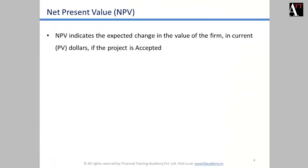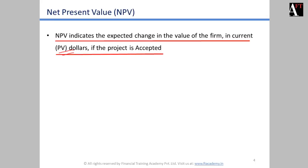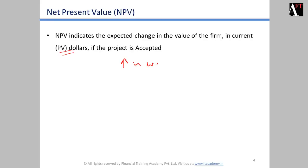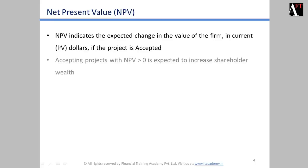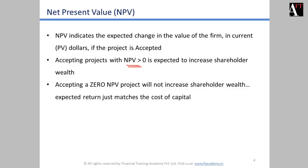The NPV indicates the expected change in the value of the firm in current dollar terms if the project is accepted — meaning it tells us about the increase in wealth, or from an organization's perspective, the increase in shareholders' or owners' wealth. Management will always try to accept projects that increase shareholder wealth, so we accept projects where NPV is greater than zero. Accepting a zero NPV project will not increase any shareholder wealth; the expected return is just matching our cost of capital and hence we are indifferent.